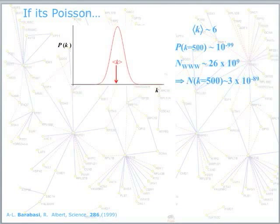But we've got to multiply that by the size of the internet itself, which is about 26 billion. And that comes out to be still, well, effectively 0. So there are no sites if the internet is described by this distribution with more than 500 links in it.